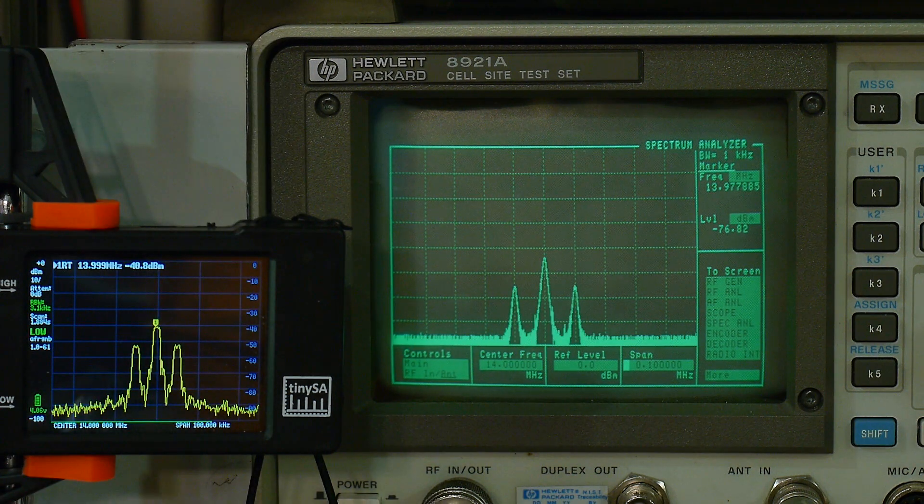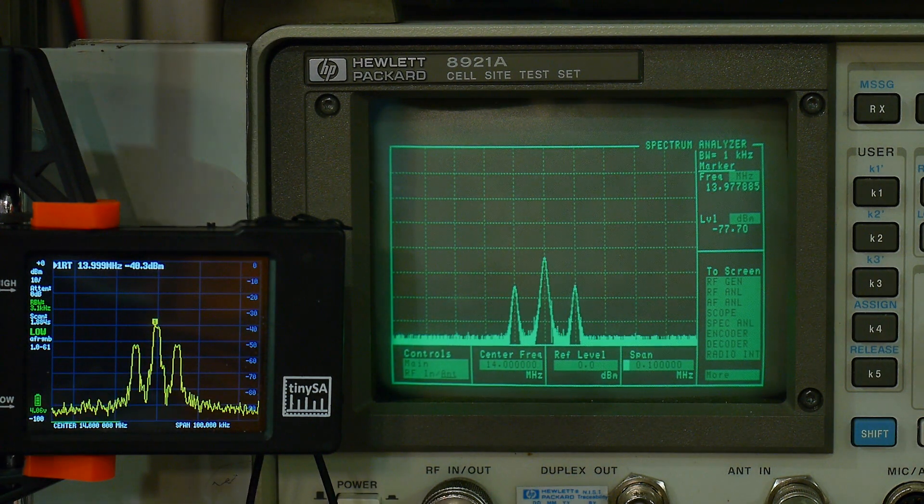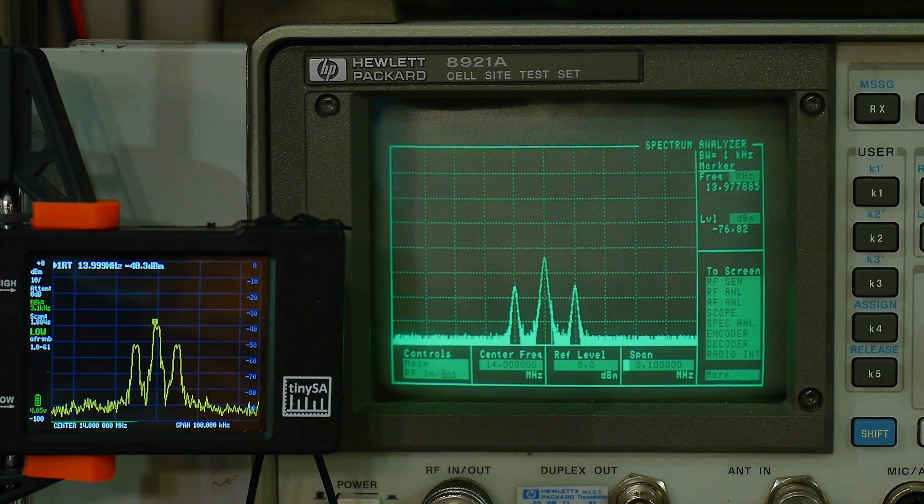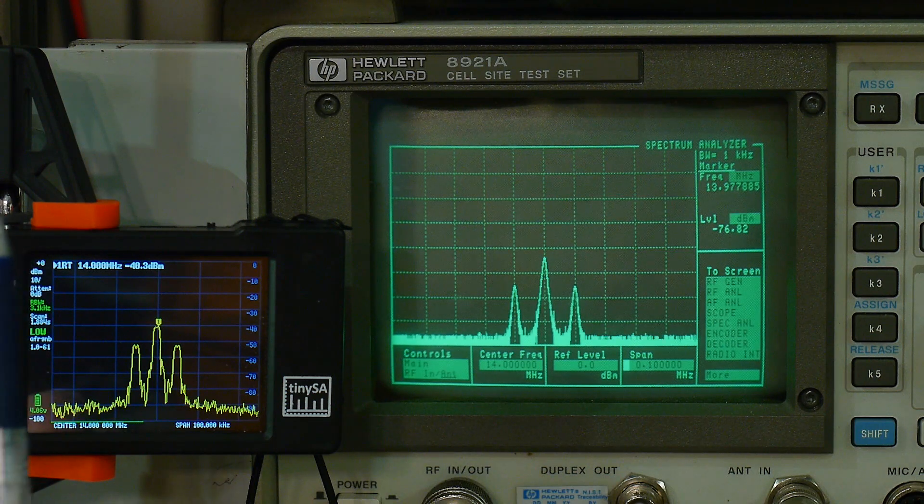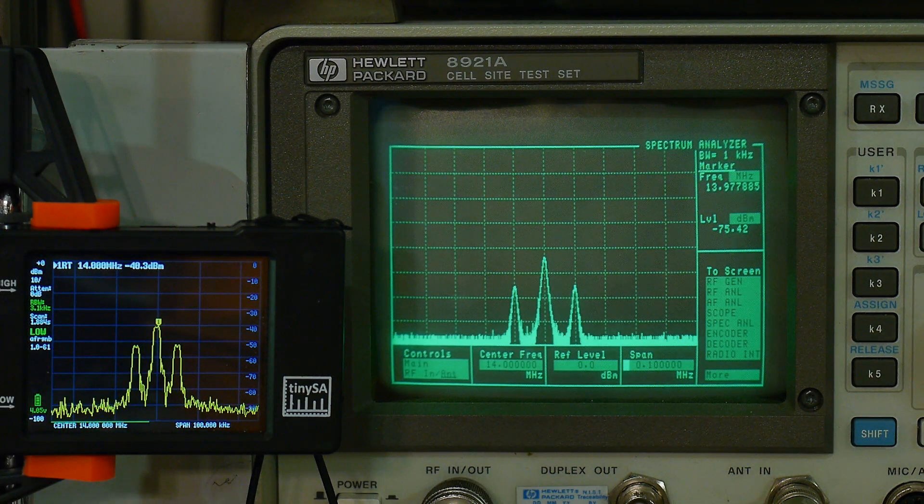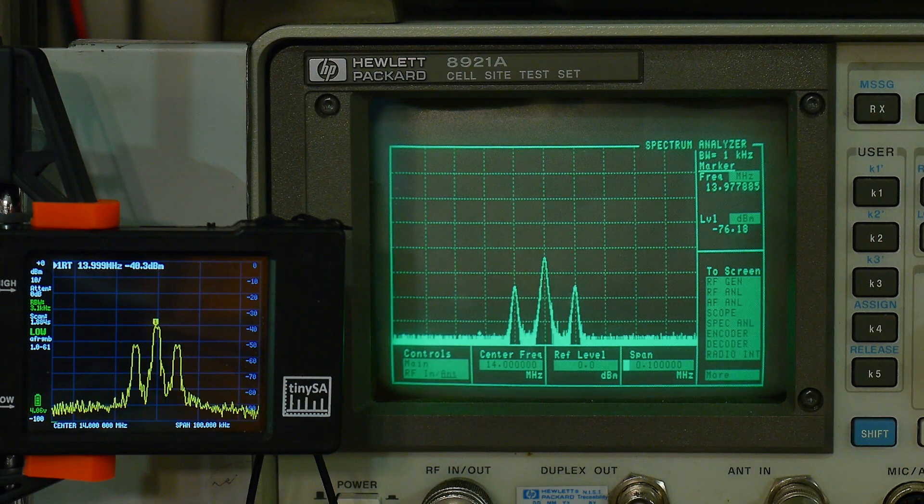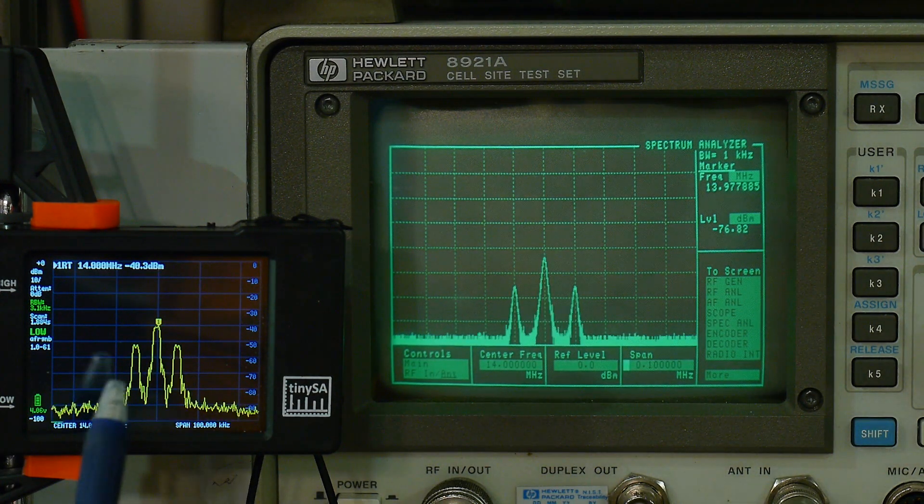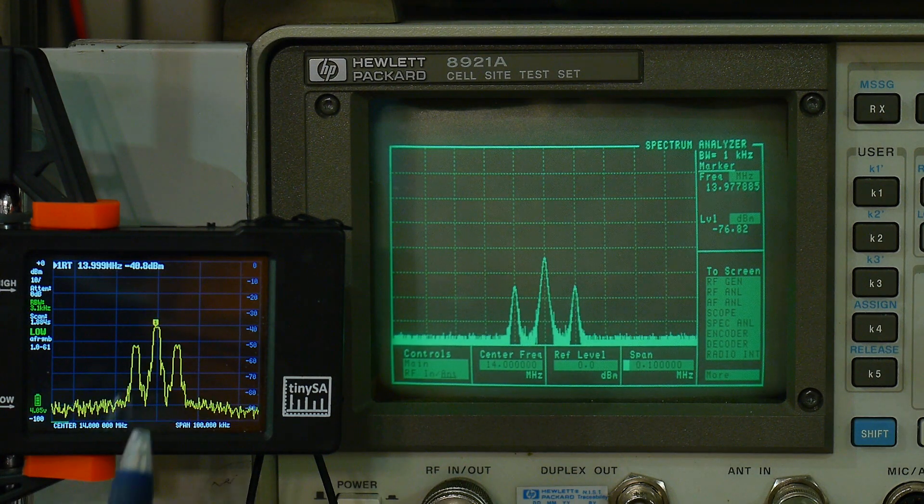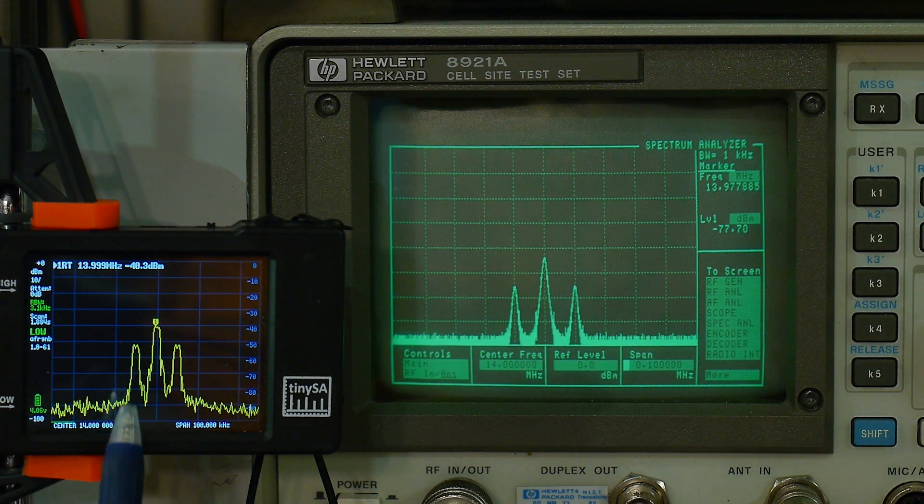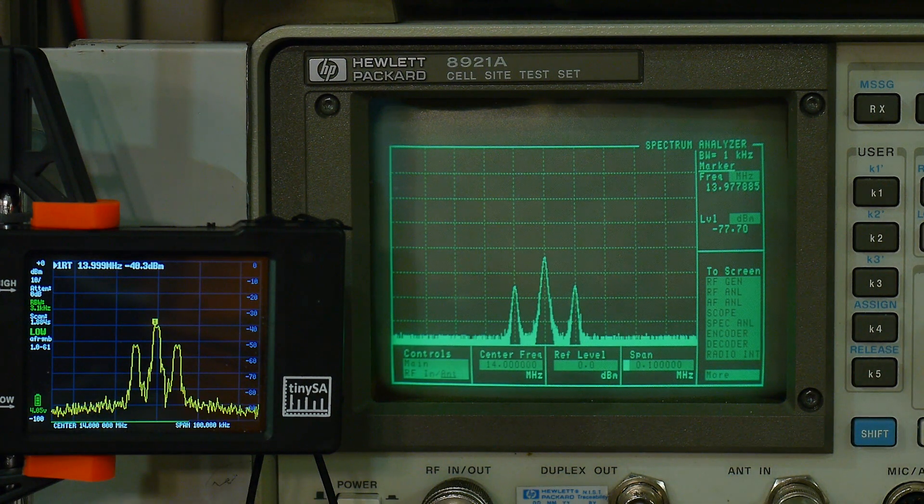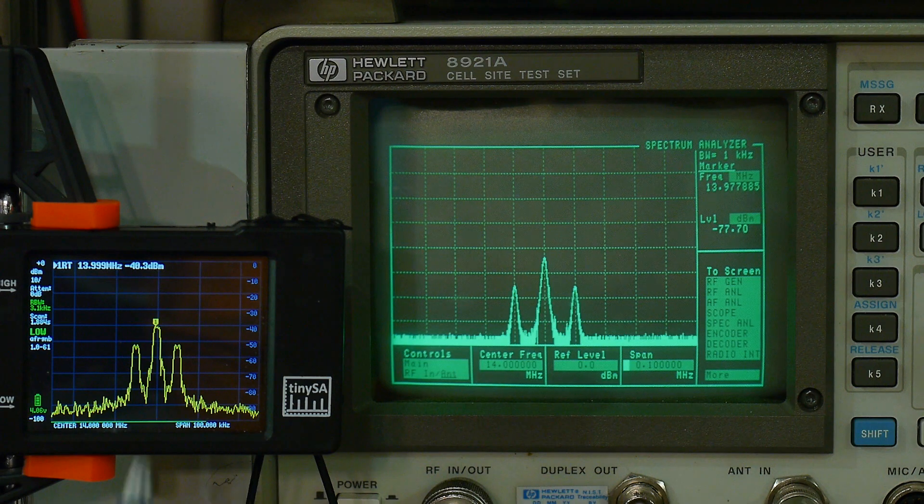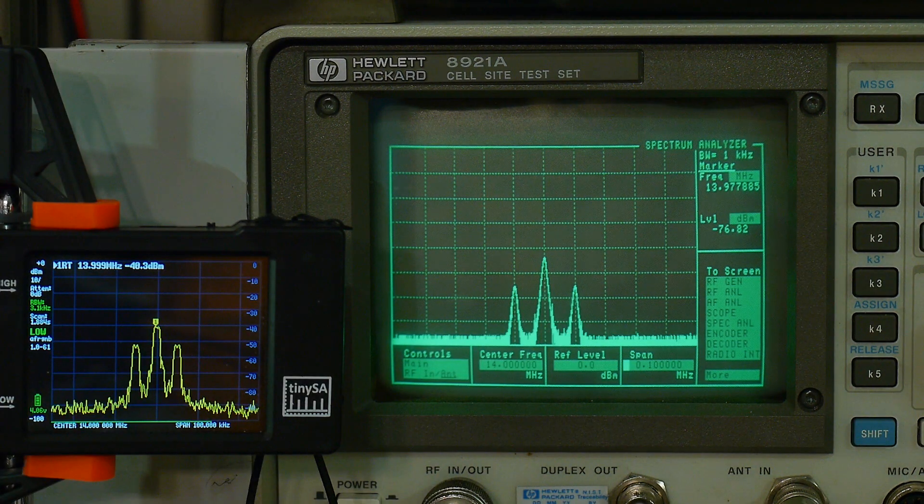I've set the resolution bandwidth manually to its lowest setting, which is 3 kHz. And so now with a 14 MHz carrier AM modulated, 10 kHz modulation frequency, 50% modulation, it's measuring exactly right. So it's doing a great job now. So now we're able to see the carrier. It's operating just like a normal spectrum analyzer. So I'm very impressed now. I really like the TinySA now.